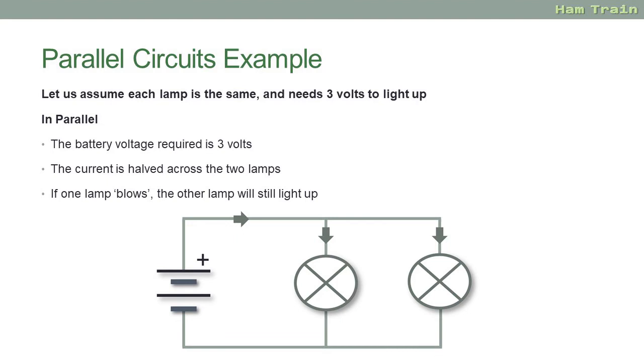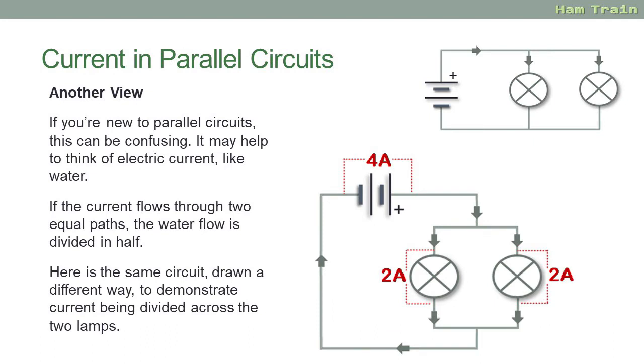The advantage here is if one of the lamps blows, the other lamp will still light. But of course twice as much current will flow through it. It's possibly still a bit confusing, so let's look at this another way. It sometimes helps to think about electric current in the same way as we think about water flowing.